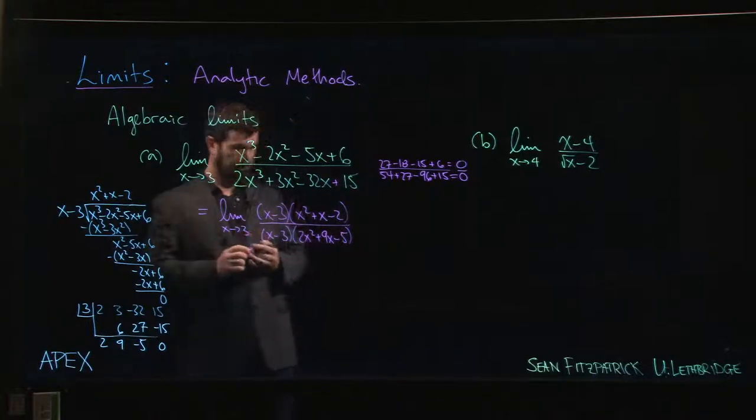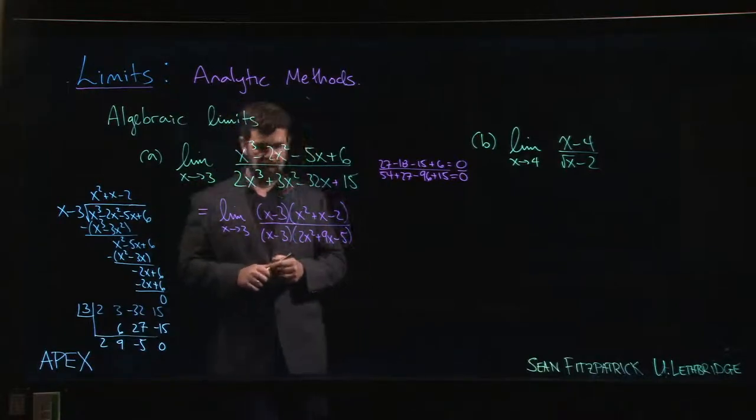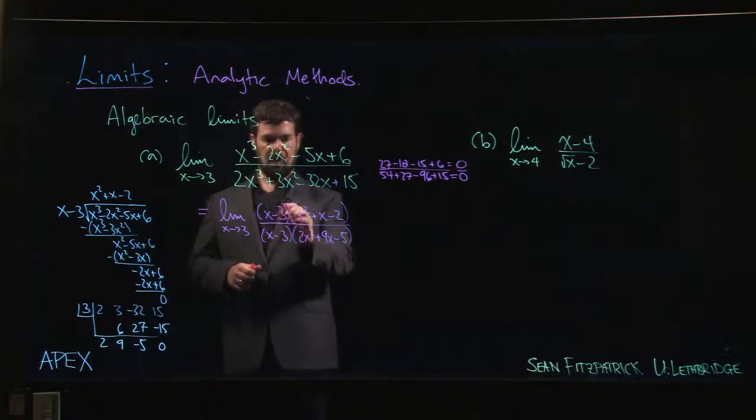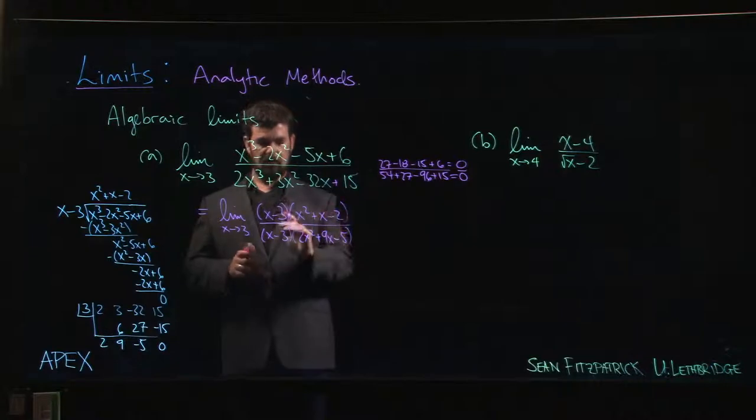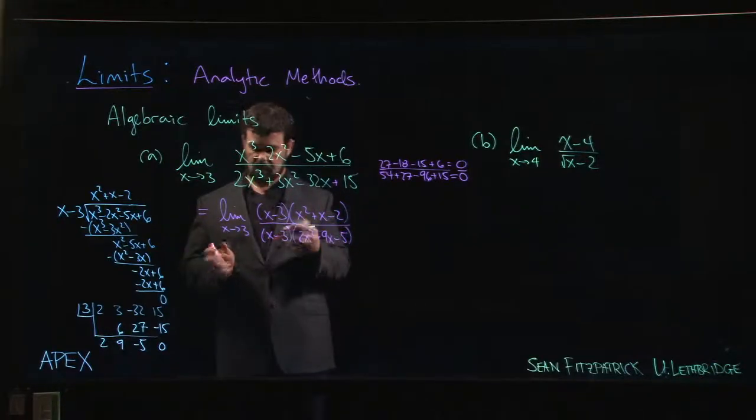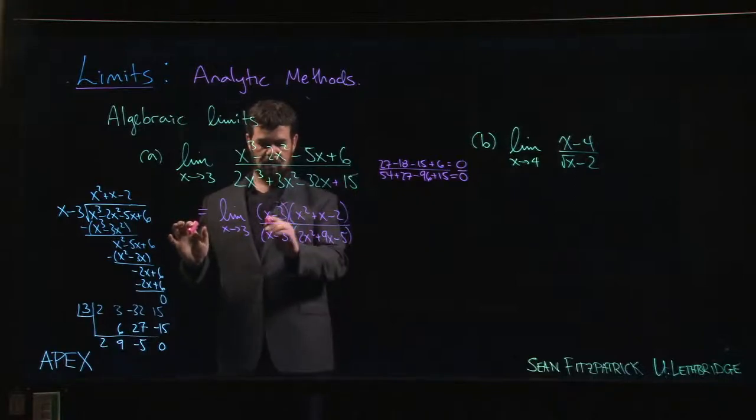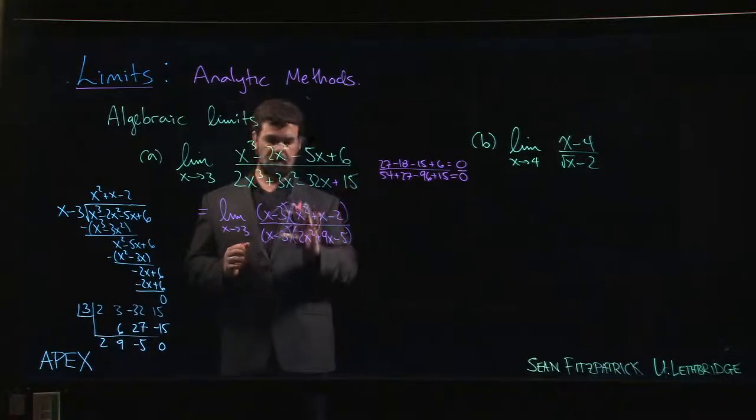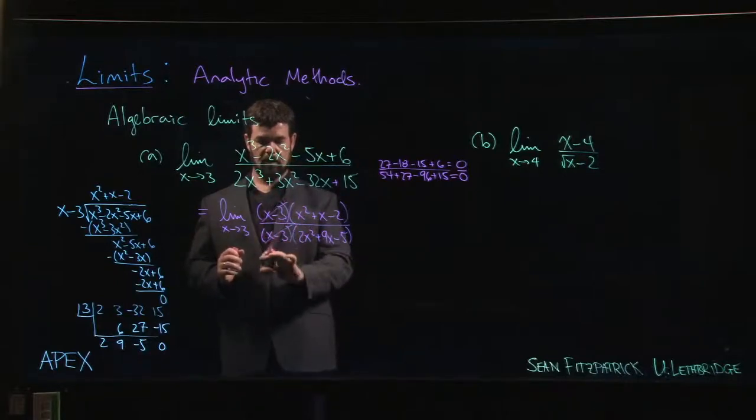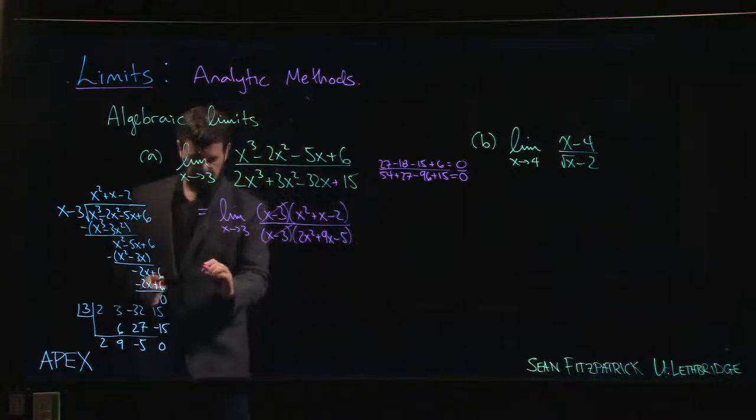Now, good to know. What do we do from here? Well, because we factored out that x minus 3, and because we have this theorem saying that with a limit, if two functions disagree at one point and it's the point at which you're taking the limit, it doesn't matter, you'll still get the same answer. So basically what that means is that in a limit, you're allowed to cancel if you have a common factor top and bottom.